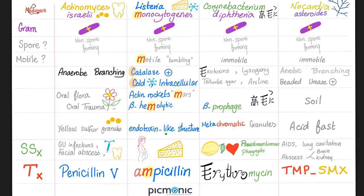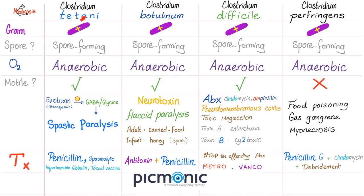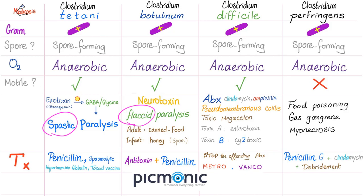Now let's compare among these four Clostridia: Clostridium tetani, botulinum, difficile, and perfringens. All gram-positive, all bacilli, all spore-forming, all anaerobic. Most are motile; perfringens is non-motile. Tetani: exotoxin tetanospasmin → spastic paralysis via inhibiting GABA and glycine → Risus sardonicus, locked jaw, opisthotonus. Botulinum: neurotoxin → flaccid paralysis; adults from canned food, infants from honey; symptoms include diplopia, floppy baby, ptosis, constipation. Difficile: triggered by clindamycin and ampicillin, treated by metronidazole and vancomycin; toxin A (enterotoxin), toxin B (cytotoxin); causes diarrhea, pseudomembranous colitis, toxic megacolon.